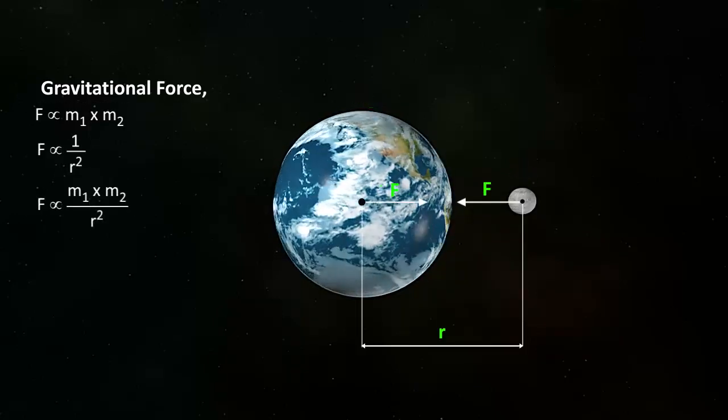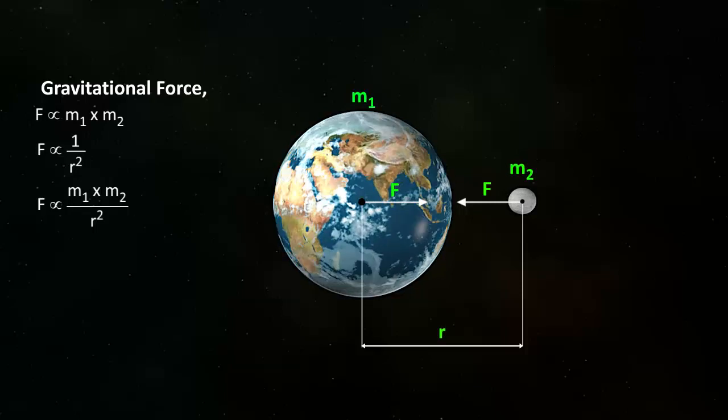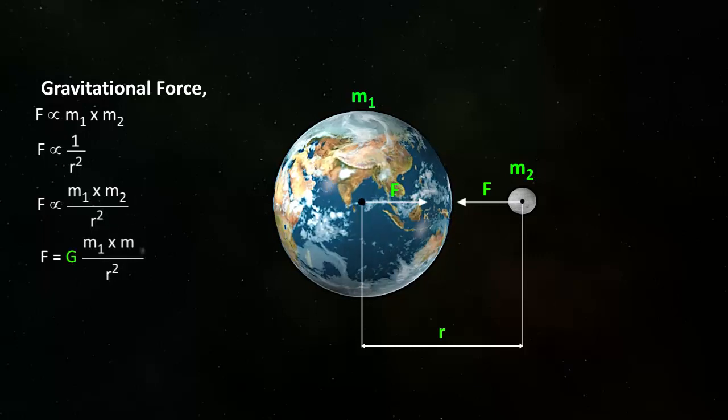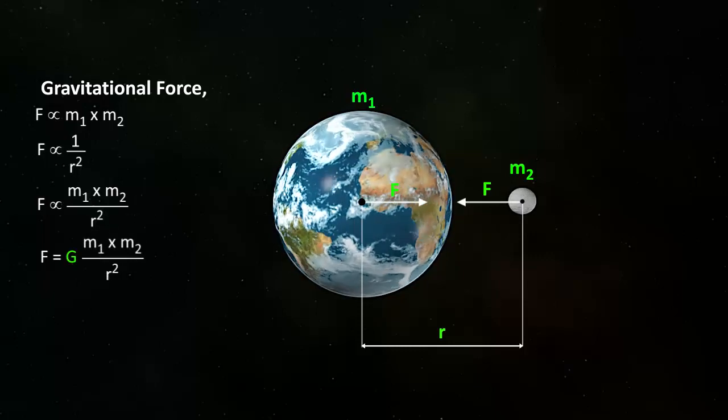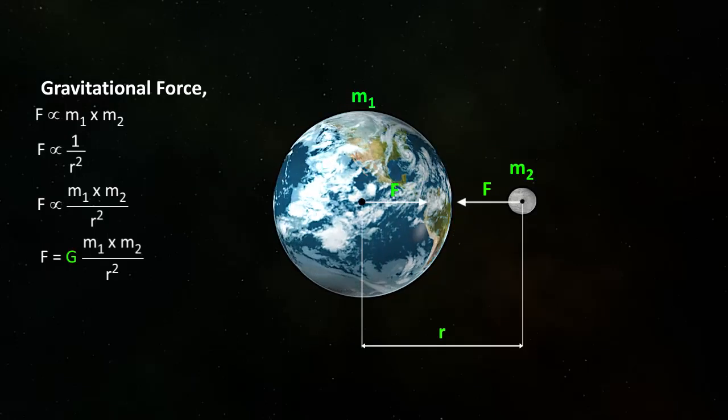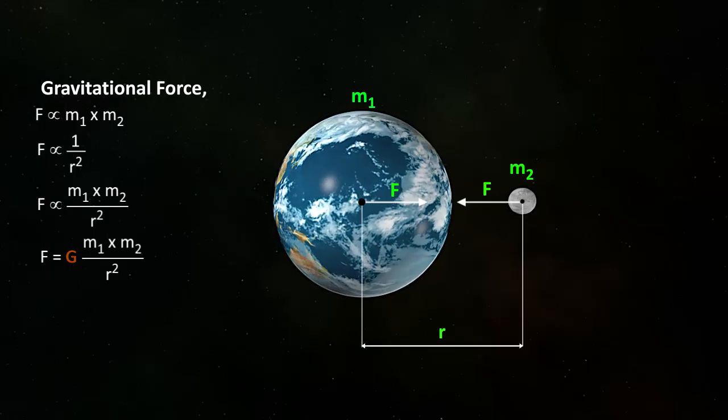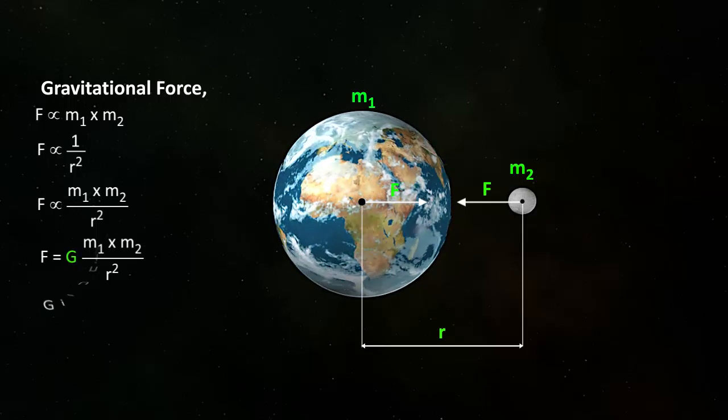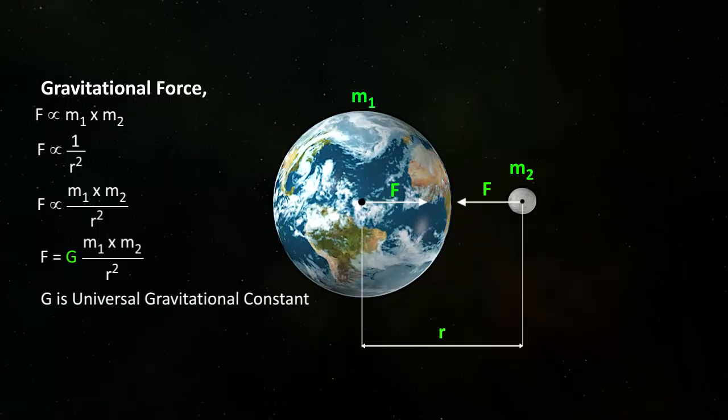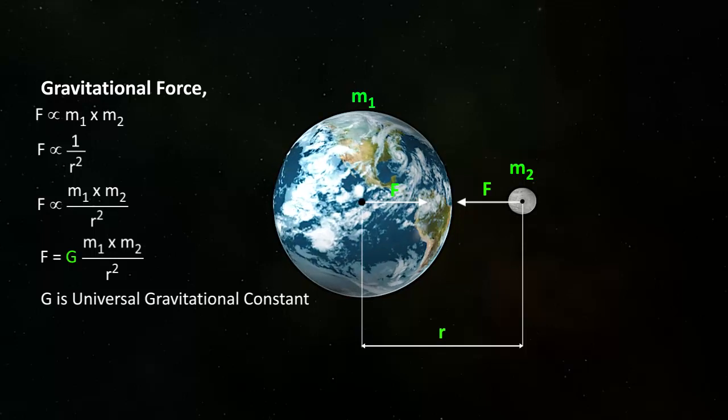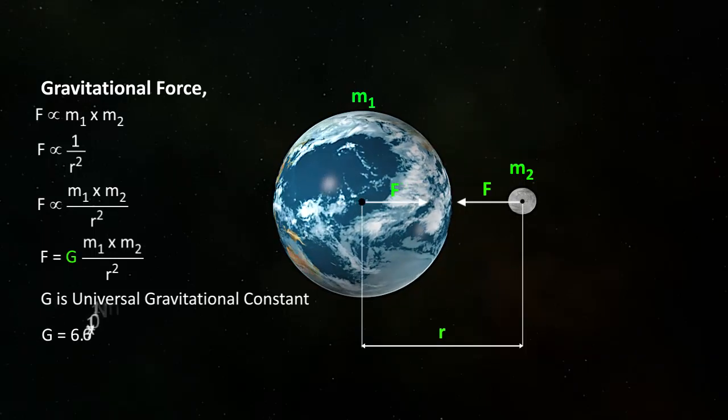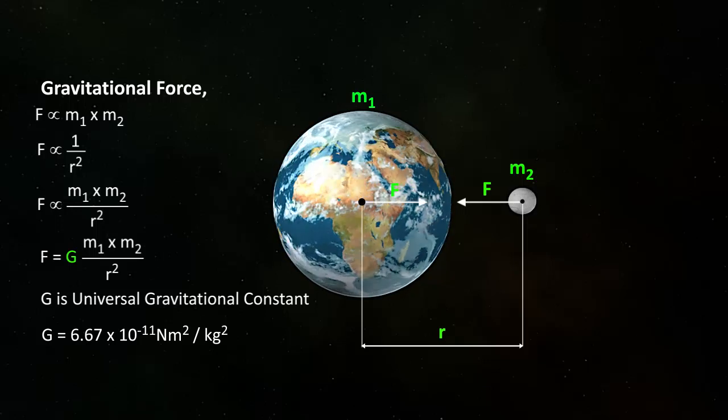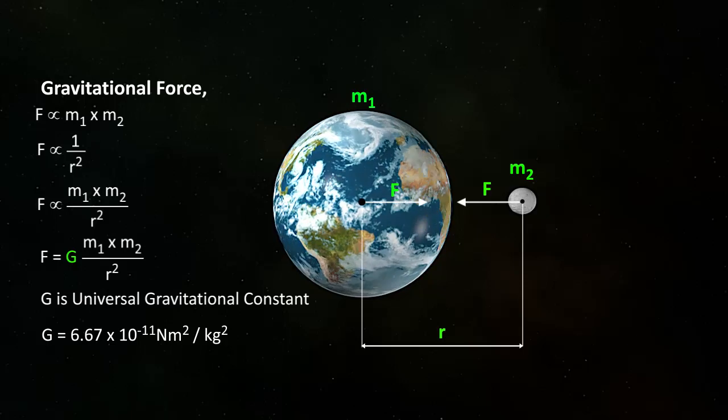On combining the two relations, we get F is directly proportional to M1 M2 by R square. By removing the proportionality, we get F is equal to G M1 M2 by R square. G is a constant of proportionality and is called the universal gravitational constant, and its value is 6.67 times 10 to the power minus 11 Nm square per kg square.